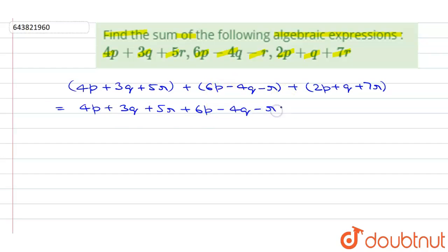So minus 4q minus r plus 2p plus q plus 7r. Now we will bring all the like terms together. Like terms mean the terms which have same variable.